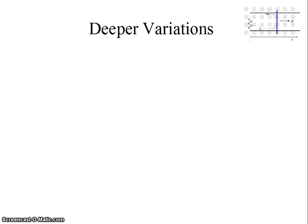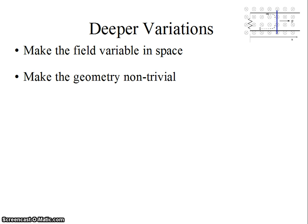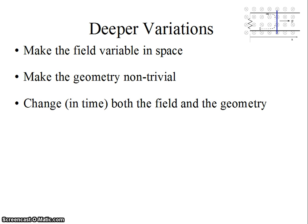I do note there are other variations. I could make things more complicated by saying the field is variable in space. It sounds like a good problem, maybe a little hard for a test. I could make the geometry really non-trivial. I don't know how offhand, but that could be a good test problem. It's probably a little too hard. Or I could change both the field and the geometry in time. Honestly, that sounds too hard to grade for a test, but it makes for a good problem, and it might be more realistic.